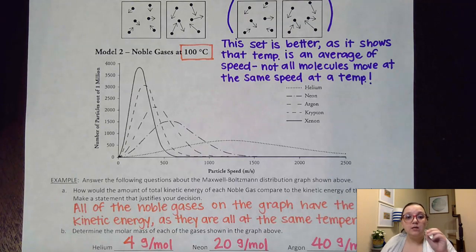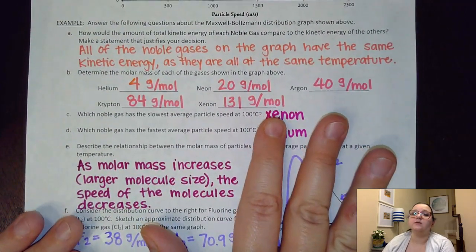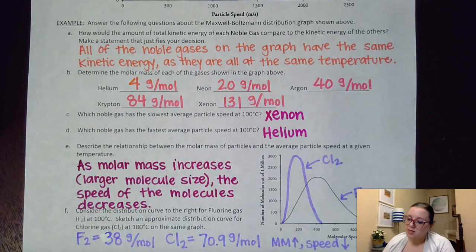But what that basically means is that kinetic energy is impacted by both m mass and v velocity. And so the speed, the velocity can vary depending on what the mass of the molecule is, even though the kinetic energy value might be exactly the same. And so that really impacts us here on these graphs. So again, that was a trick question. They were all the same kinetic energy because they all had the same temperature.